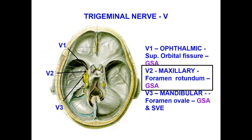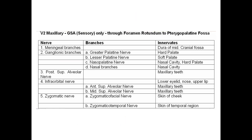The trigeminal nerve, as you know, is the fifth cranial nerve. It has three divisions: ophthalmic, maxillary, and mandibular. The maxillary passes through foramen rotundum. It is sensory only — general sensation — through the foramen rotundum to the pterygopalatine fossa.